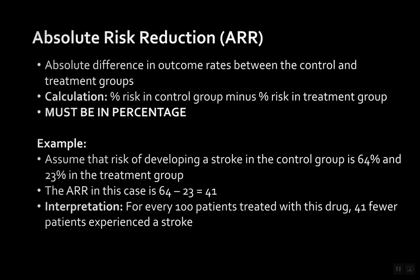Next, absolute risk reduction — the absolute difference in outcome rates between the control and treatment groups. We calculate this by taking the percent risk in the control group minus the percent risk in the treatment group. This number must be in percentage. For example, assume the risk of developing a stroke in the control group is 64% and 23% in the treatment group.